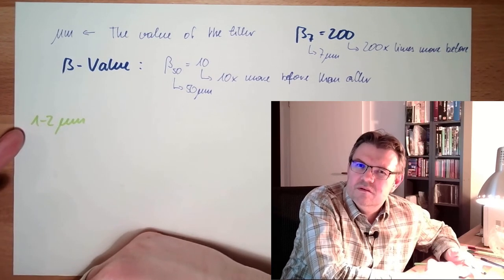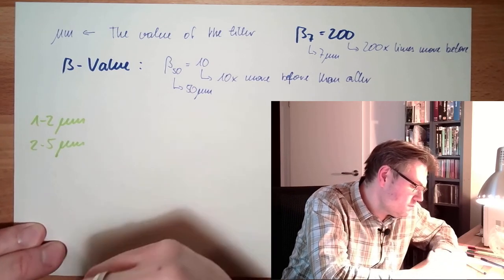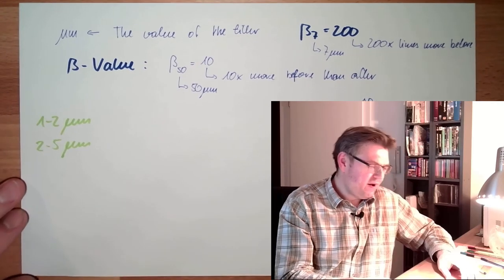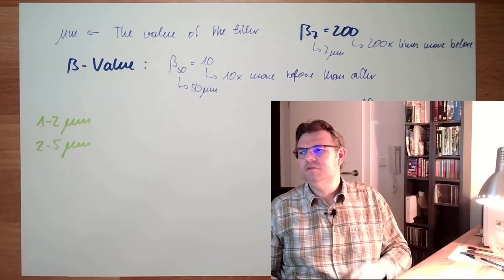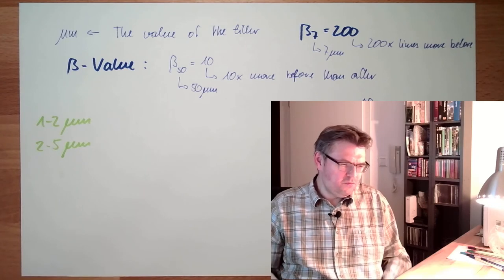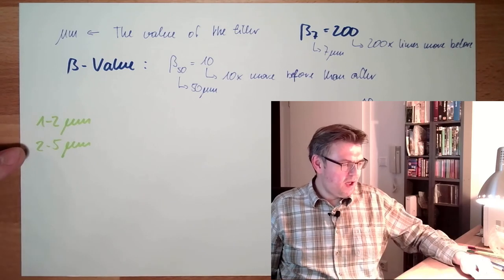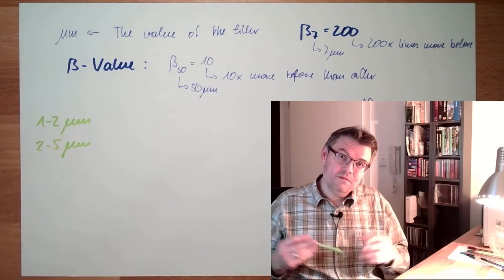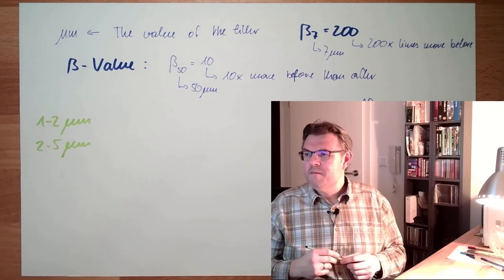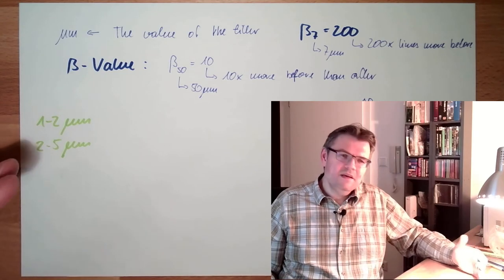One to two microns, this is really the finest hydraulic systems used in aviation or something like this. Really expensive. Then, two to five microns, this is sensitive, high power systems, control and regulating systems. High pressure things. High pressure, you tend to have smaller particles simply because they easier press those things in the gaps.